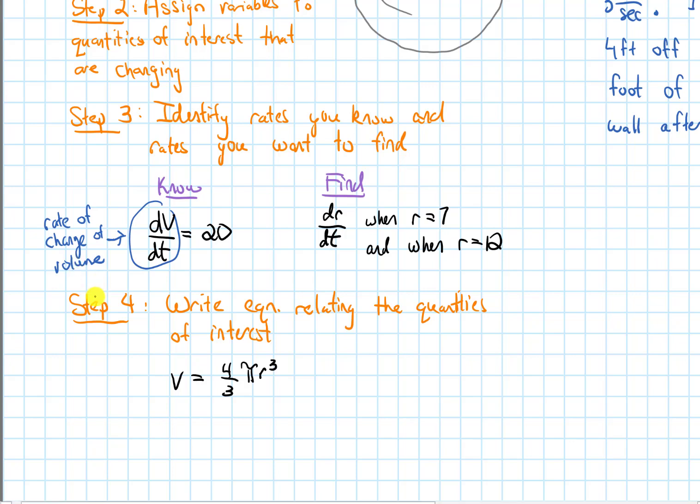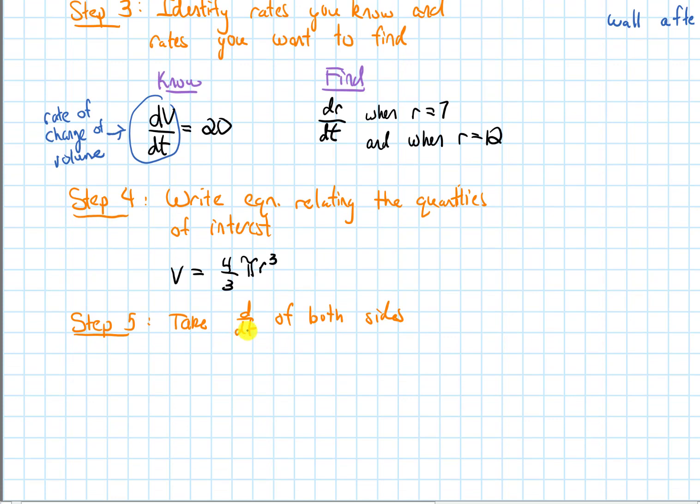After we have that, now I need to somehow get a dt in this. Like I need a dV/dt, I need a dr/dt. To do that, this is going to be our next step. Step five is going to be to take d/dt of both sides. Because the variable t is different from the variables that I have in my problem, it's going to involve differentiating implicitly.